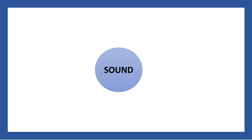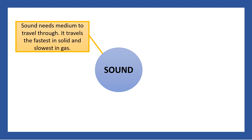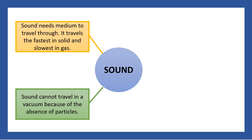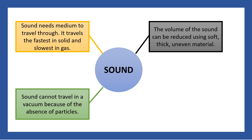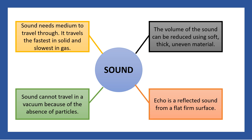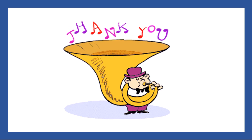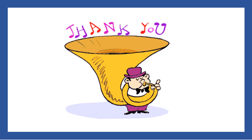That's it for sound and materials. The four things we learned today: sound needs a medium to travel through; it travels fastest in solid and slowest in gas; sound cannot travel in a vacuum because of the absence of particles; the volume of sound can be reduced using soft, thick, uneven material; and echo is a reflected sound from a flat, firm surface. Thank you and have a nice day.